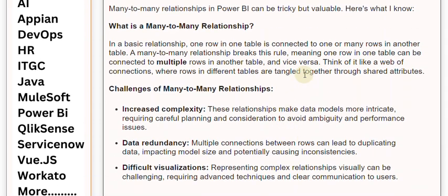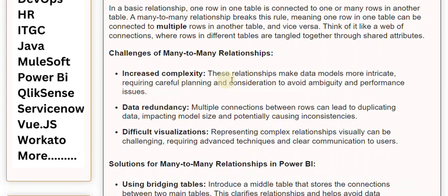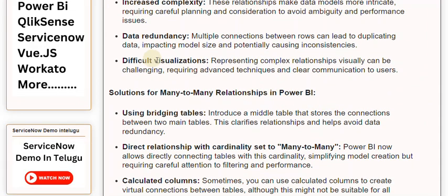Think of it like a web of connections, where rows in different tables are tangled together through shared attributes. Challenges of many-to-many relationships: Increased complexity — these relationships make data models more intricate, requiring careful planning and consideration to avoid ambiguity and performance issues. Data redundancy — multiple connections between rows can lead to duplicating data, impacting model size and potentially causing inconsistencies. Difficult visualizations — representing complex relationships visually can be challenging, requiring advanced techniques and clear communication to users.